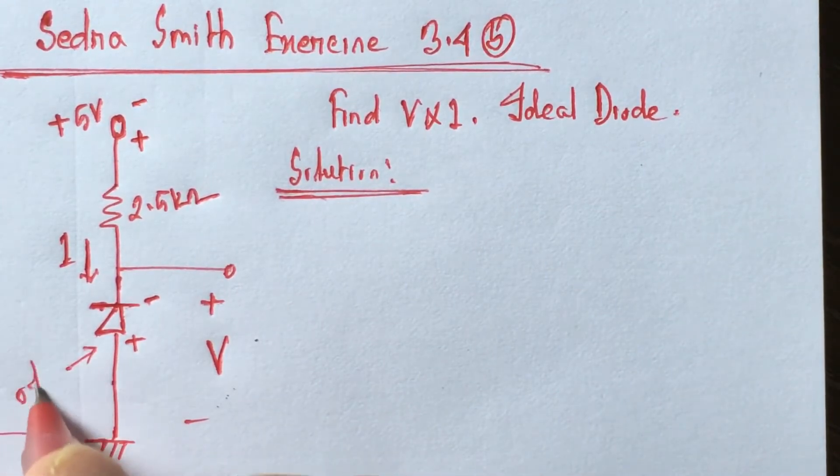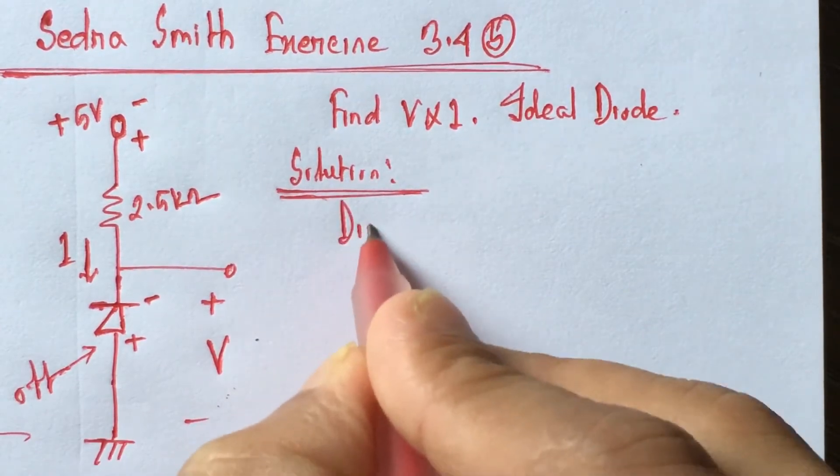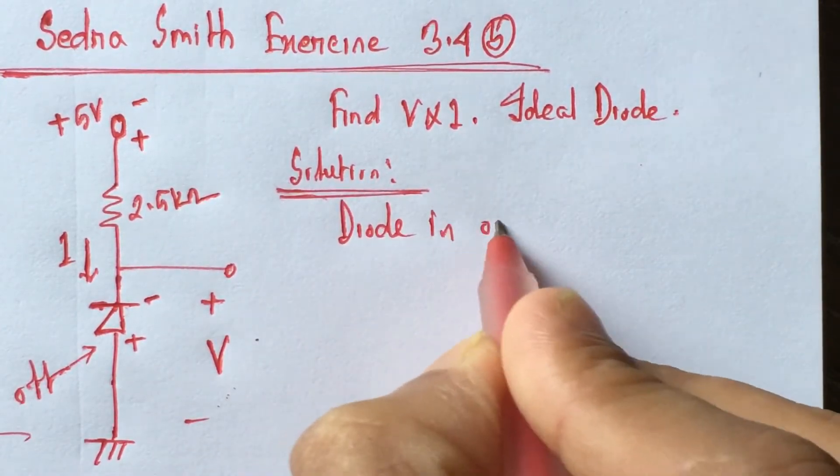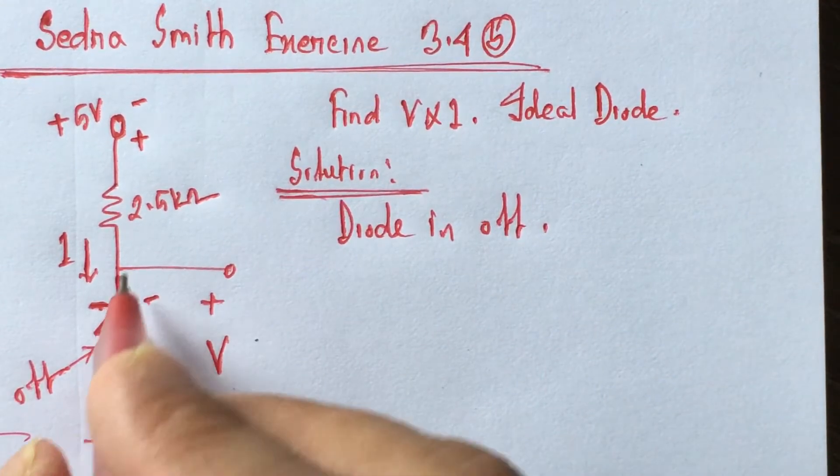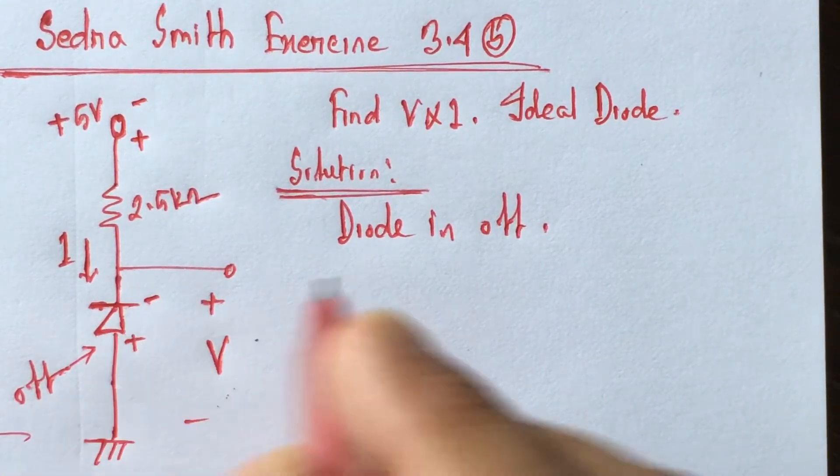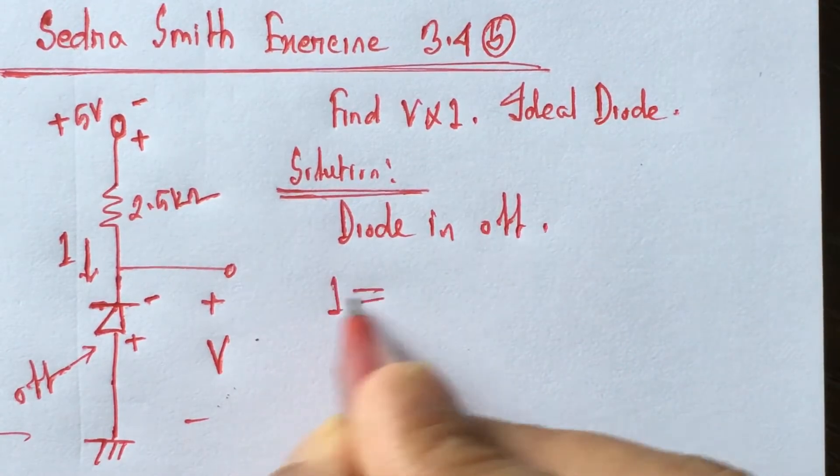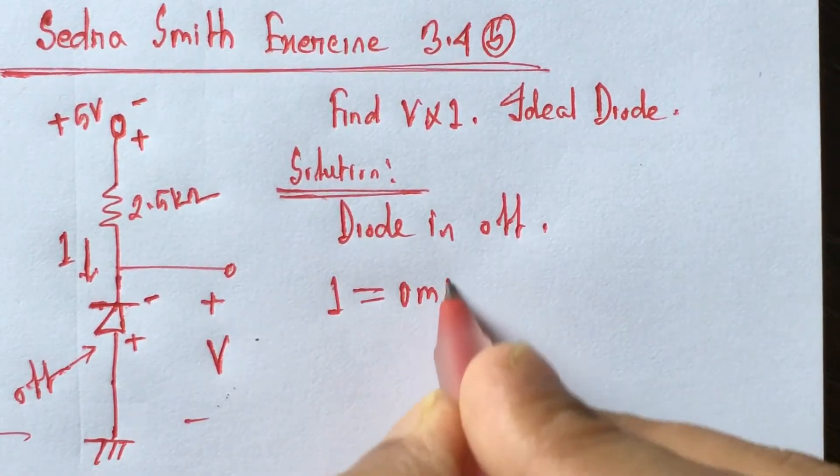That is, diode is off. Since diode is off, so this is an open circuit. Virtually this is an open circuit. So no current will flow. That means I is equal 0 milliampere.